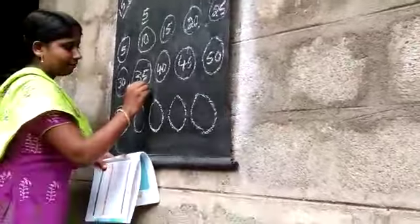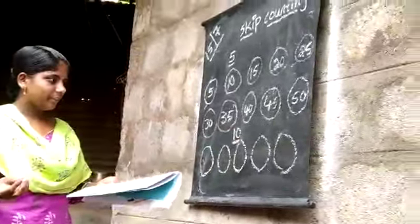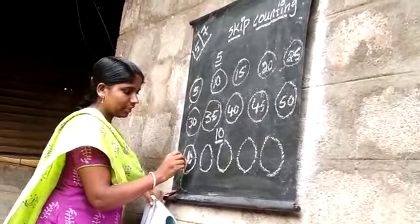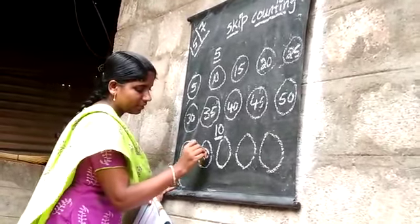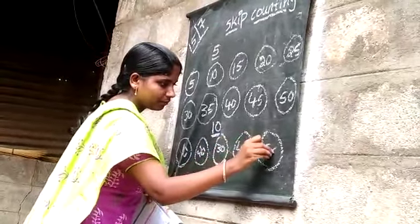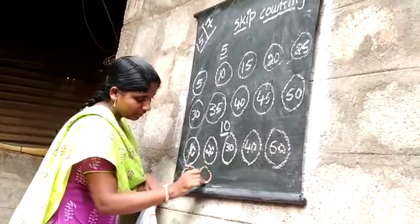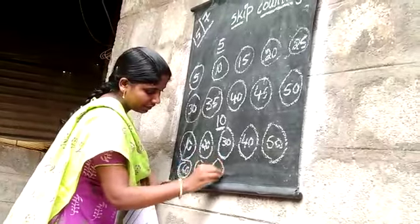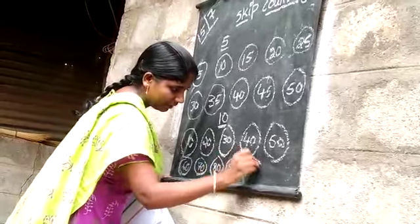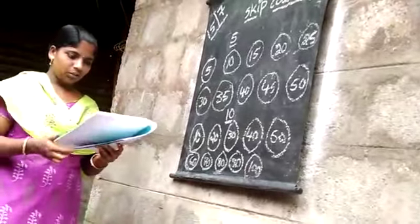Skip count by 10. Skip count by 10 and fill the numbers. 10 plus 10 is 20. 20 plus 10 is 30. 30 plus 10 is 40. 40 plus 10 is 50. 50 plus 10 is 60. 60 plus 10 is 70. 70 plus 10 is 80. 80 plus 10 is 90. 90 plus 10 is 100. Like this you want to complete this space.